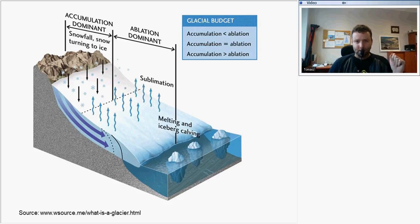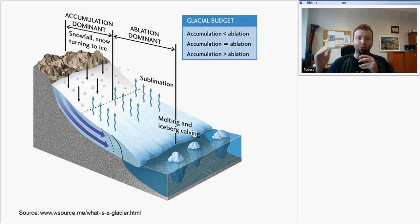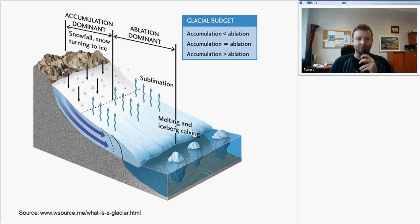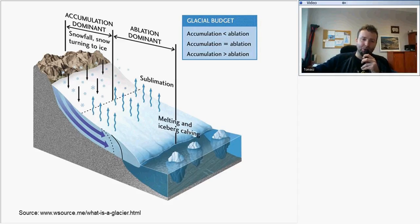For the overall mass budget, if ablation is higher than accumulation, the glacier has a negative mass balance and it will shrink. If accumulation is higher than ablation, that means positive mass balance and the glacier can grow. In winter, glaciers usually grow because there is little ablation. During summer, when melting occurs, snow may remain in some upper parts but will not persist in lower zones. This gives us the distinct accumulation zone and ablation zone of a glacier.